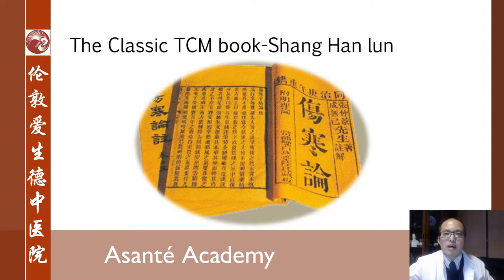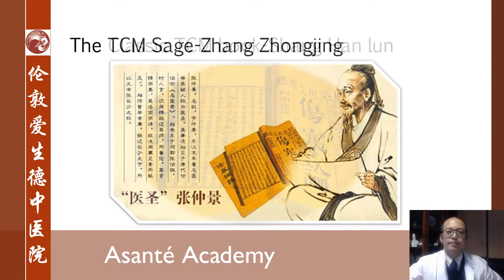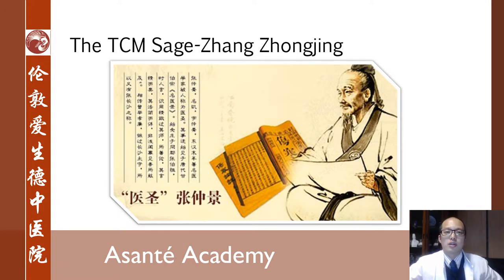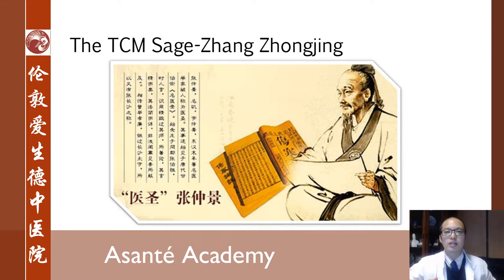The six meridian method originally comes from the classic traditional Chinese medicine book, Shang Han Lun. This book is very famous in the traditional Chinese medicine field. It was written by Zhang Zhongjing in ancient China — if he were still alive, he would be 2,000 years old. Zhang Zhongjing is called the medicine sage in traditional Chinese medicine. The book he wrote, Shang Han Lun, is still regarded as the classic book in TCM, because it is the bridge between Chinese medicine theory and traditional Chinese medicine practice.